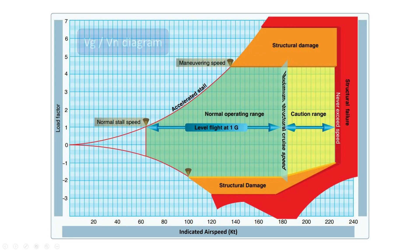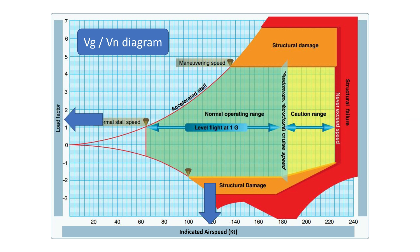The VG, also called the VN diagram, is a visual representation of load factor versus indicated airspeed, showing the normal operating flight envelope and the limiting load factors which identify when structural damage up to catastrophic failure may occur.